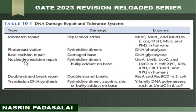Next is nucleotide excision repair (NER), which corrects pyrimidine dimers and also removes bulky adduct bases. The enzymes involved in NER include UvrA, UvrB, UvrC, and UvrD in the case of E. coli. In humans, the enzymes include XPC, XPA, XPD, ERCC1, XPF, and XPG.